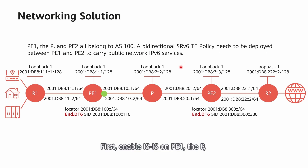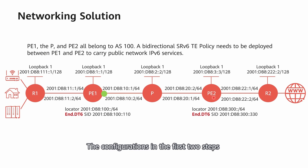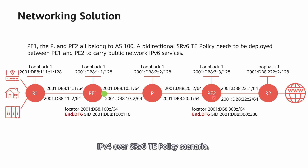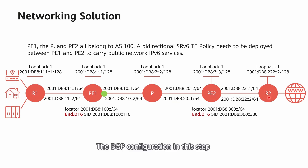First, enable IS-IS on P1, the P, and P2 to achieve basic route reachability. Second, configure an SRv6 TE policy between P1 and P2. The configurations in the first two steps are similar to those in the public network IPv4 over SRv6 TE policy scenario. Third, configure a BGP IPv6 unicast peer relationship between P1 and P2 to advertise routes between R1 and R2. The BGP configuration in this step is slightly different from that in the IPv4 scenario.